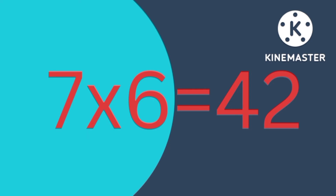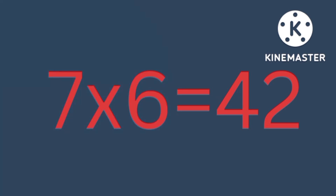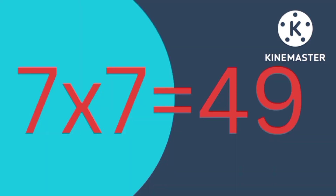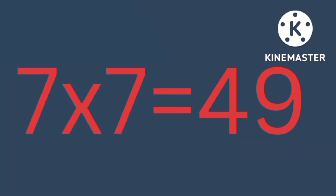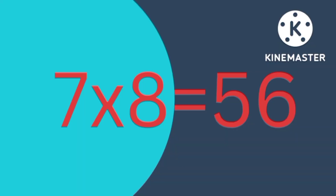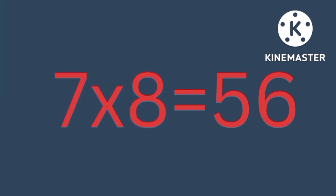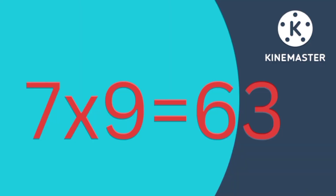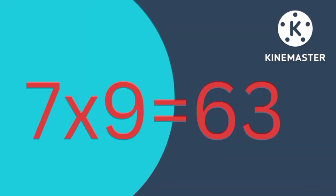7×6 is 42. 7×7 is 49. 7×8 is 56. 7×9 is 63.